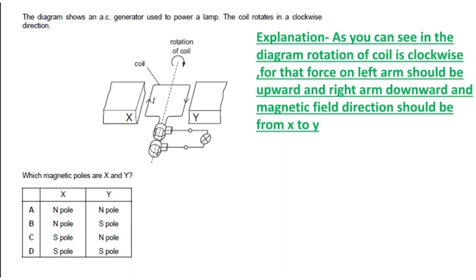As per this rule the correct answer will be answer B. The explanation is: the rotation of the coil is clockwise, so the force on the left arm should be upward and the force on the right arm should be downward. The magnetic field direction should be from X to Y, as you can see in the diagram. Therefore the correct answer is B.